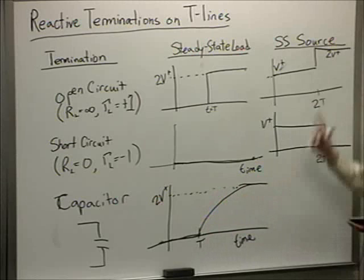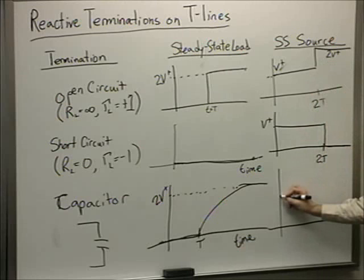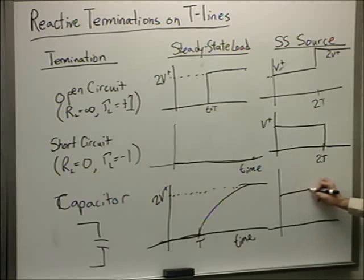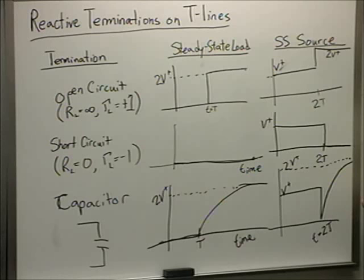At the source side, it's a combination of my short circuit initially and then my open circuit eventually. So from the source perspective it looks kind of strange — flat, then at two transit times it dips because it looks like a short circuit, but then it charges up, asymptotically approaching 2V⁺. It kind of looks like the open circuit except it's got that divot taken out of it.